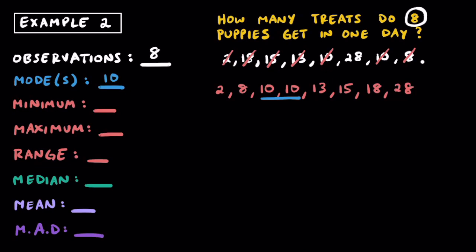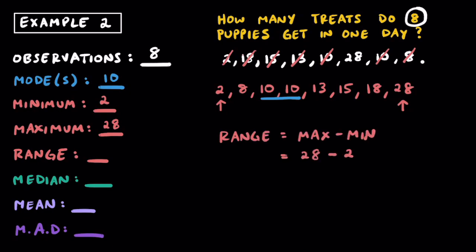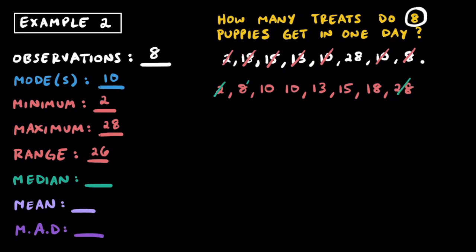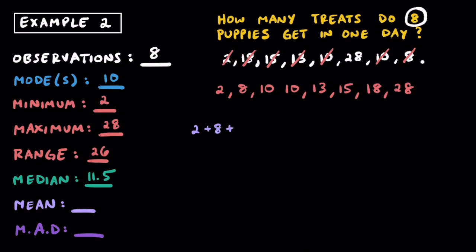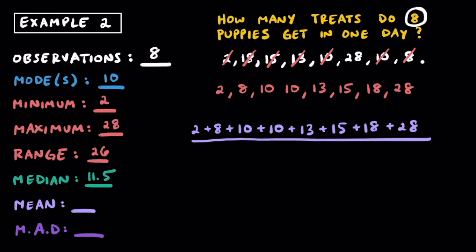Because there were two 10s, we know that two puppies each got 10 treats in one day. With observations in order, the minimum is 2 and the maximum is 28. To find the range, we take 28 minus 2, giving us a range of 26. To find the median, we cross off 2 and 28, 8 and 18, 10 and 15, and we're left with two middle numbers: 10 and 13. To find exactly between them, we average: 10 plus 13 is 23, and 23 divided by 2 is 11.5. So our median is 11.5 treats. To find the mean, we add up all treats and divide by 8 — the sum is 104, and 104 divided by 8 equals a mean of 13 treats.